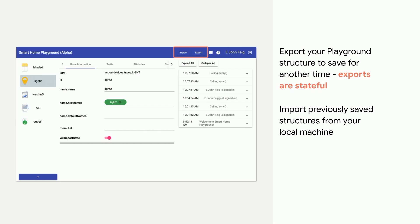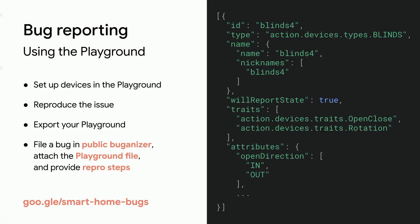The Google Home Playground should help you file better bugs that are easier for us to get fixed. Set up the devices in the Playground to match the devices you're having an issue with. Reproduce the issue. Export your Playground file. File a bug in the public bugtracker for Smart Home. Attach the Playground file, and provide repro steps along with the expected behavior and any other relevant details. If you're not able to reproduce the issue in the Google Home Playground, it might be worth taking a second look at your code.